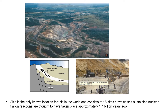The natural nuclear reactor formed when a uranium-rich mineral deposit became inundated with groundwater that acted as a neutron moderator and a nuclear chain reaction took place. The heat generated from nuclear fission caused the groundwater to boil away, which slowed or stopped the reaction. After cooling, the water returned and the reaction restarted, completing a full cycle every three hours. The fission reaction cycles continued for hundreds of thousands of years and ended when the ever-decreasing fissile material could no longer sustain a chain reaction.